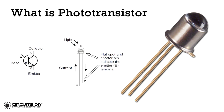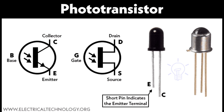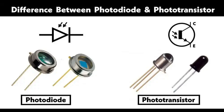Automatic lighting controls use phototransistors to measure ambient light and turn lights on or off accordingly — used in street lighting, outdoor lighting, and energy-saving lighting systems in buildings. Medical devices use phototransistors to detect changes in light absorption due to blood flow or other physiological changes; used in pulse oximeters, heart rate monitors, and other non-invasive medical monitoring devices. Phototransistors are integral to many modern electronic systems, with applications spanning consumer electronics, industrial automation, medical devices, security systems, and more.